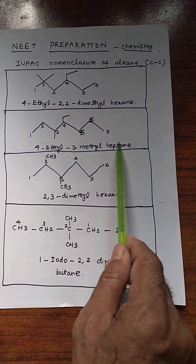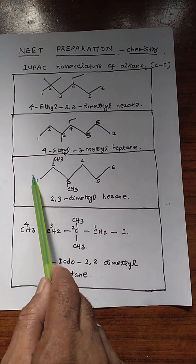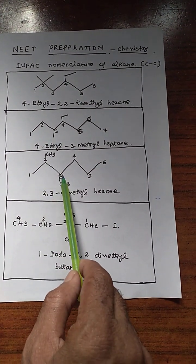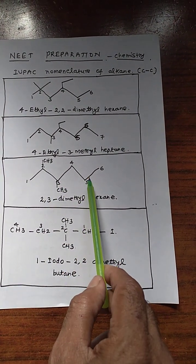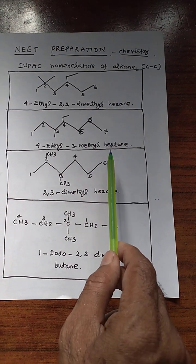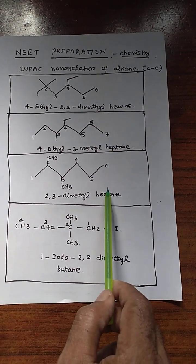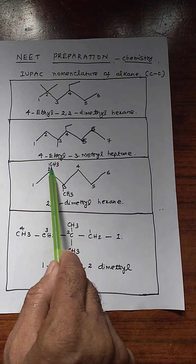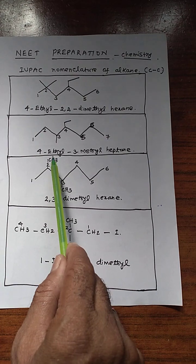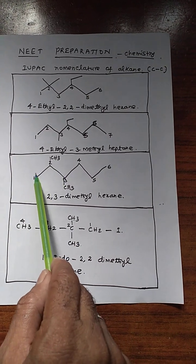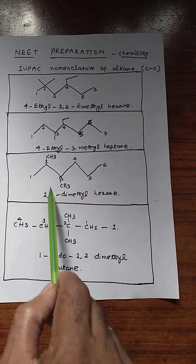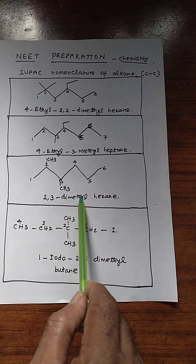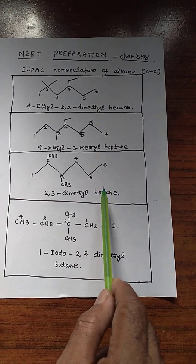7 means heptane. Counting 1, 2, 3, 4, 5, 6 carbons — so hexane. And position 2 has a methyl group nearby, so numbering starts at 1. So 2,3-dimethylhexane.